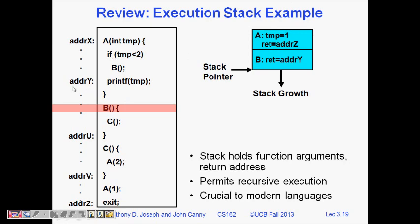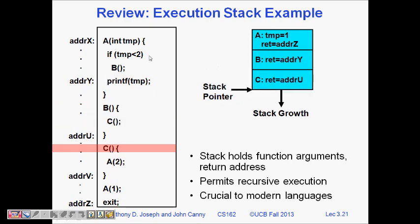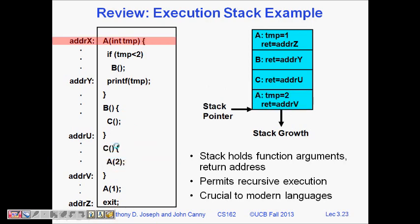From B it calls C, so again something is pushed into this stack for the particular thread. Now address U is there where it should return. A2 it calls again, it goes to A, and then address V is the return pointer.